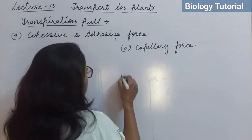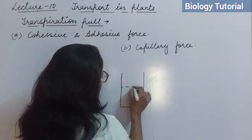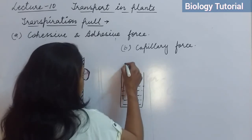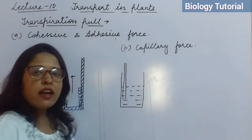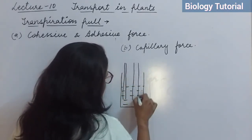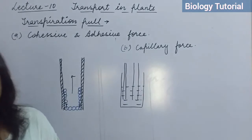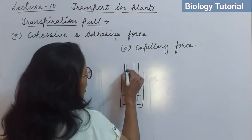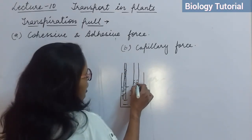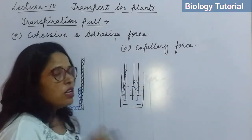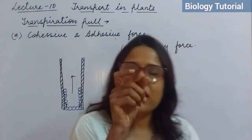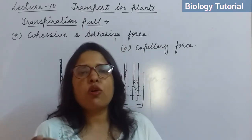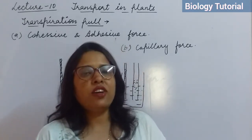For example, consider a glass of water with two straws inserted — one with a smaller diameter and one with a larger diameter. In the straw with the smaller diameter, the water level will be high, while in the straw with the larger diameter, the water level will be low. This means the thinner the tube, the higher the water level rises. This capillary action also helps in generating transpiration pull.